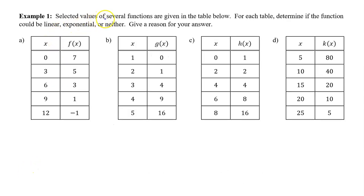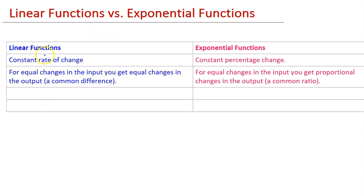Example 1. Selected values of several functions are given in the table below. For each table, determine if the function could be linear, exponential, or neither, and give a reason for your answer. Linear functions have a constant rate of change — for equal changes in the input, you get equal changes in the output: a common difference. Exponential functions have a constant percentage change — for equal changes in the input, you get proportional changes in the output: a common ratio.